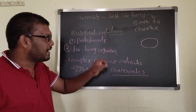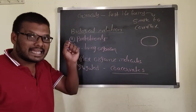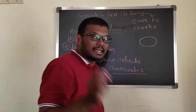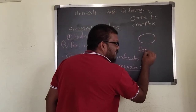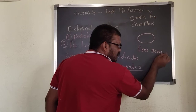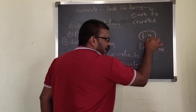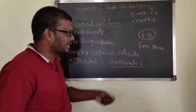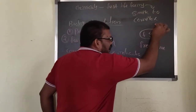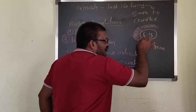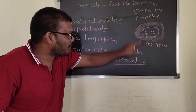This coacervate has a chemical organizer present — that chemical organizer is called a free gene. This free gene has attracting capacity; it can attract the surrounding molecules and they form a lipid layer.